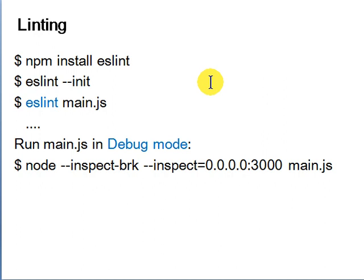After writing your code, lint it. First install ESLint, initialize it, then run the linter. ESLint will flag syntax problems, unused variables, unreachable code, and similar issues in your code.